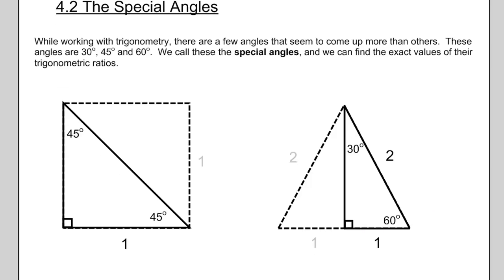We're going to start by looking at two diagrams. One is called the unit square, where each side has a length of one, and we've cut this square diagonally in half. Because each corner of the square is normally 90 degrees, when we cut it diagonally, those two corners each become 45 degrees. The other diagram starts as an equilateral triangle with each side of length two. Taking an altitude down the middle divides the base in half to one, and it cuts the top angle from 60 degrees down to 30 degrees. These two diagrams will help us find the sine, cosine, and tangent ratios for all three special angles.